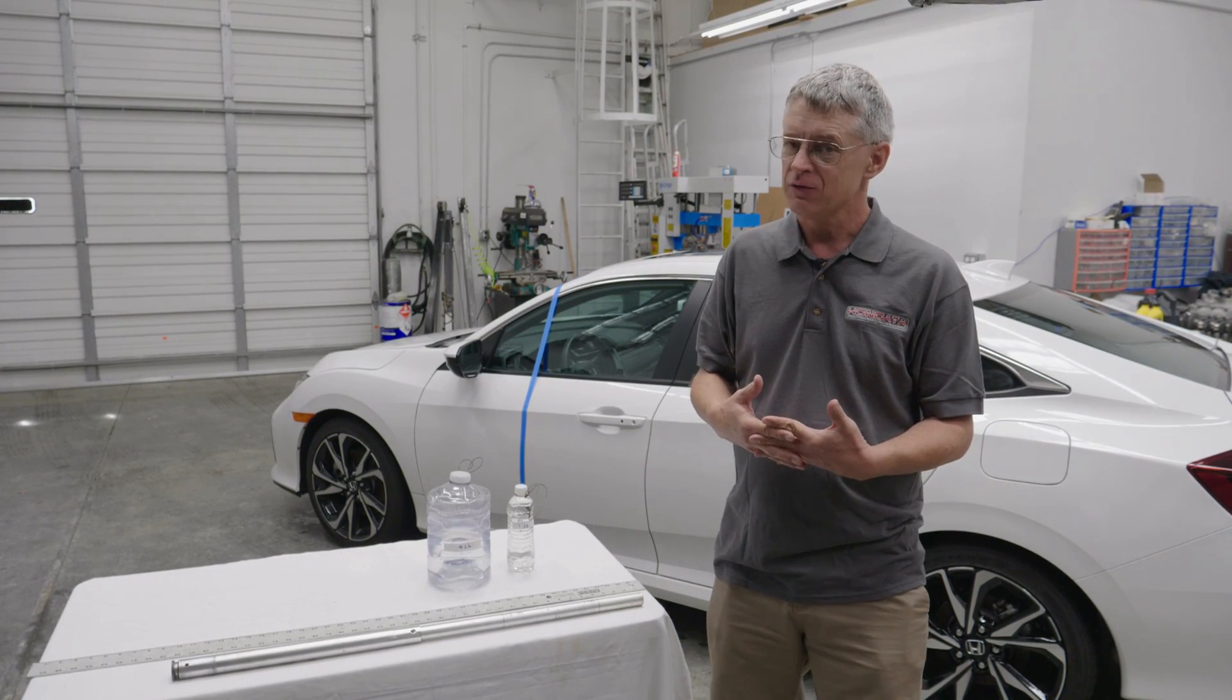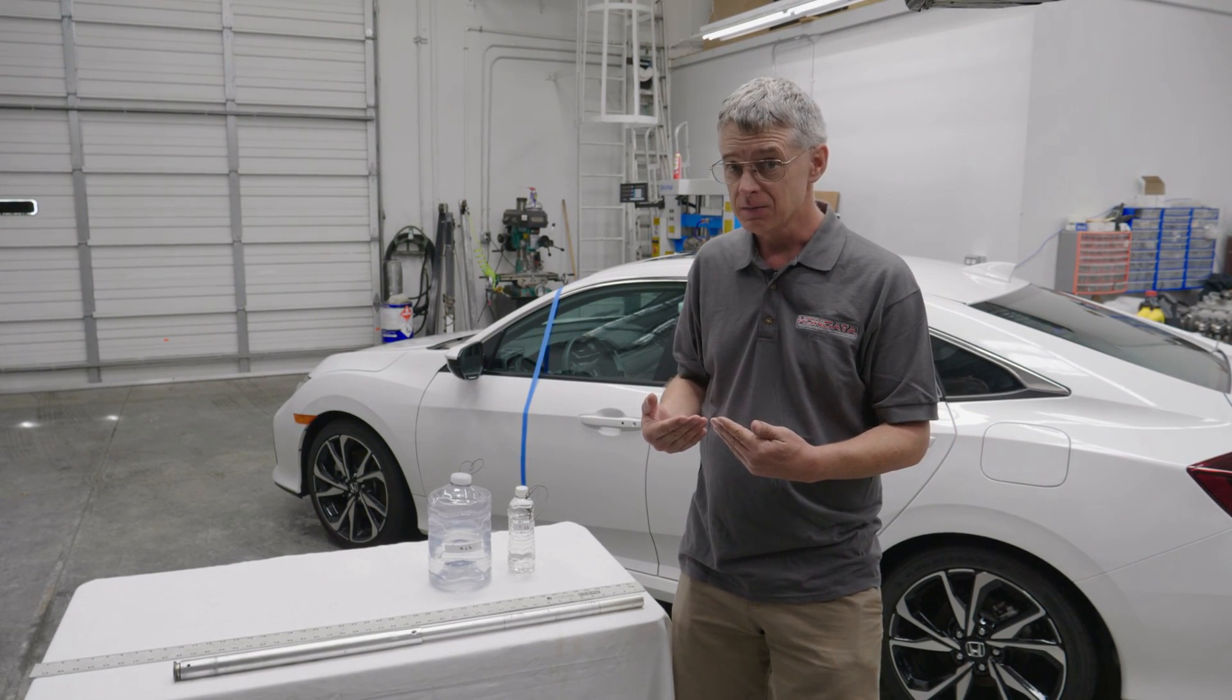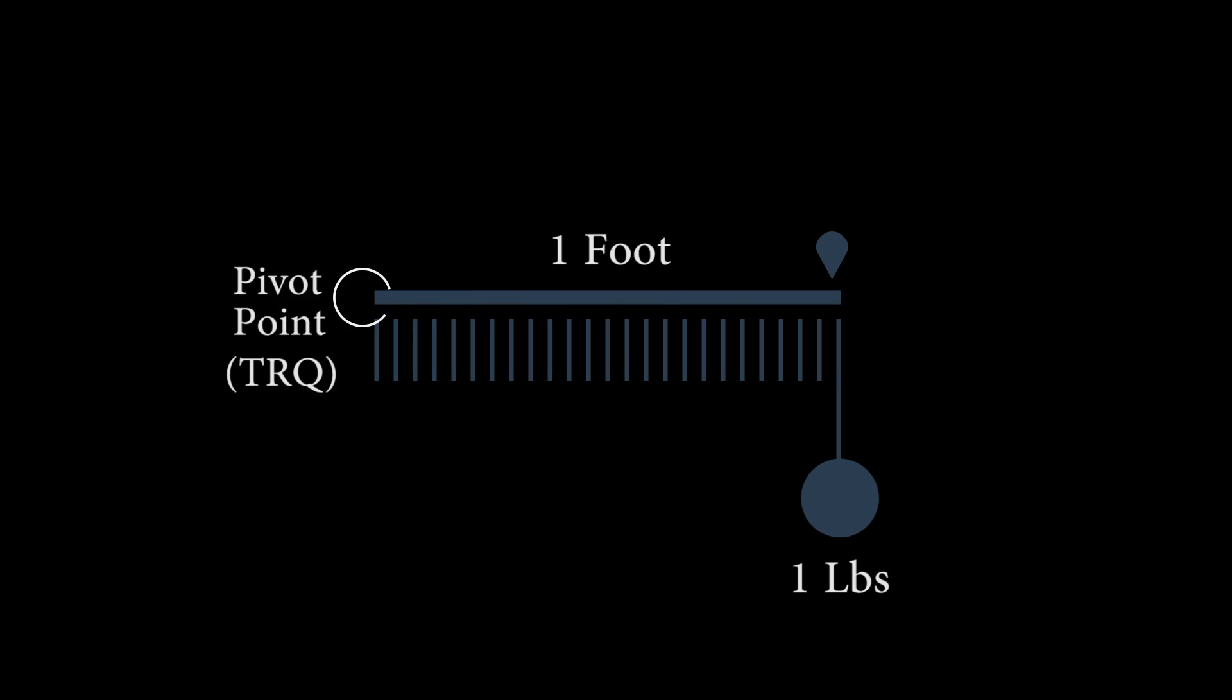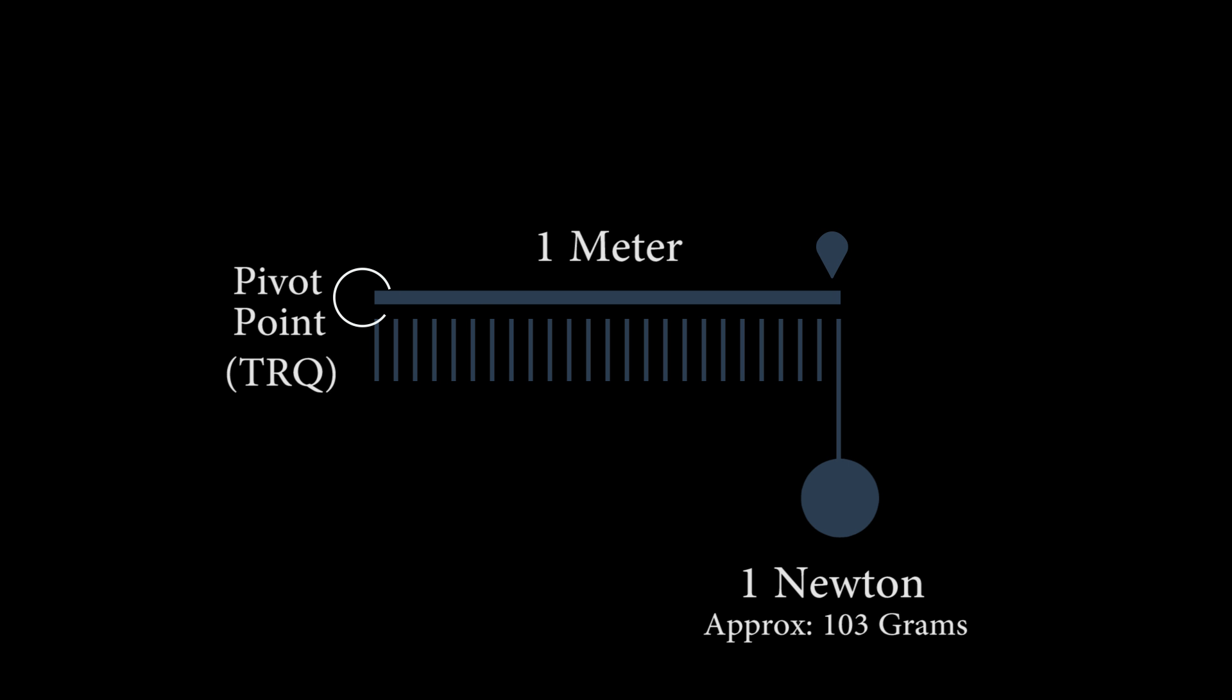Torque is measured in typically one of two ways: pound-feet, which is the weight of one pound at one foot radius from a pivoting point, or Newton-meters, which is one Newton at one meter, and one Newton is equal to about 103 grams.